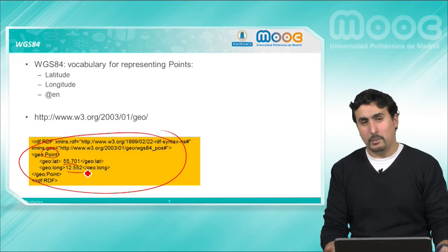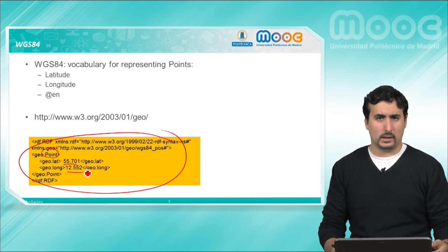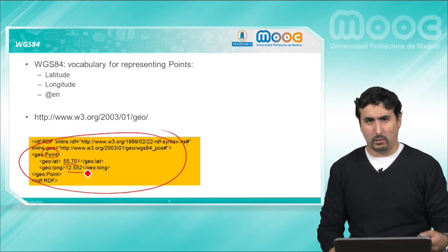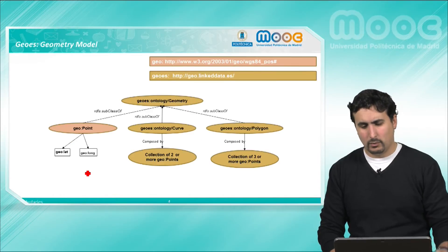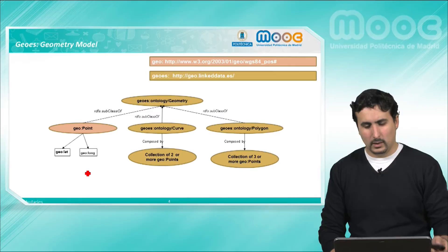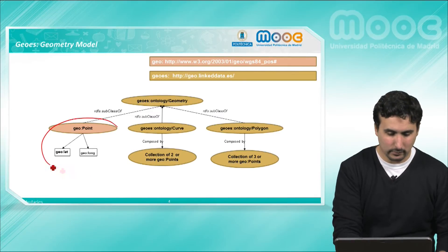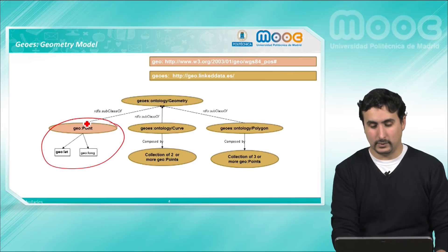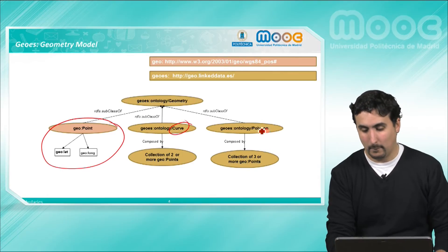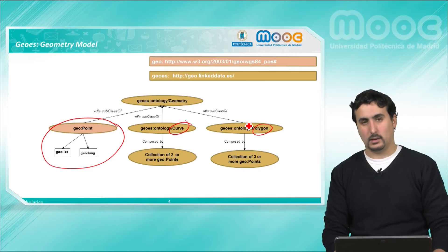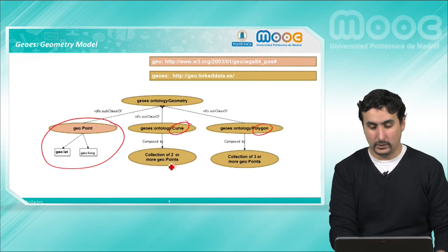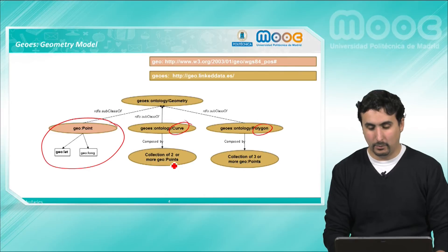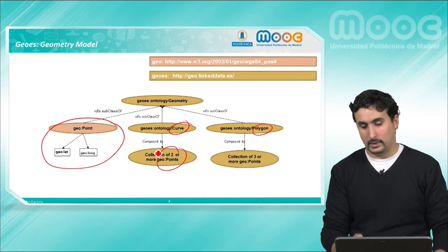But what happens if we want to represent more complex information rather than just points, for example lines or polygons? For that, there is an extension in which we have the geo point from the WGS84 vocabulary and all other classes such as curve or polygon. A curve can be understood as a collection of two or more points, and a polygon as three or more points.